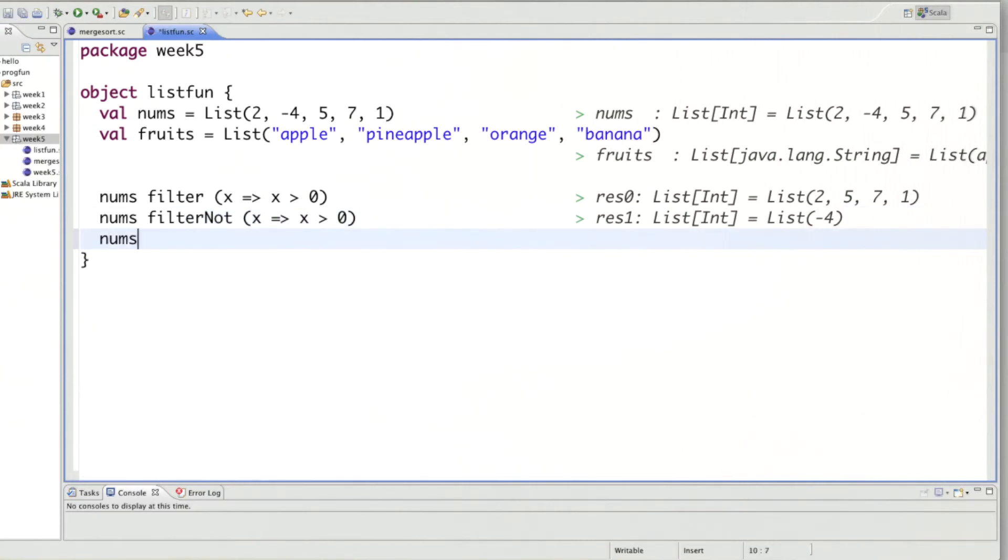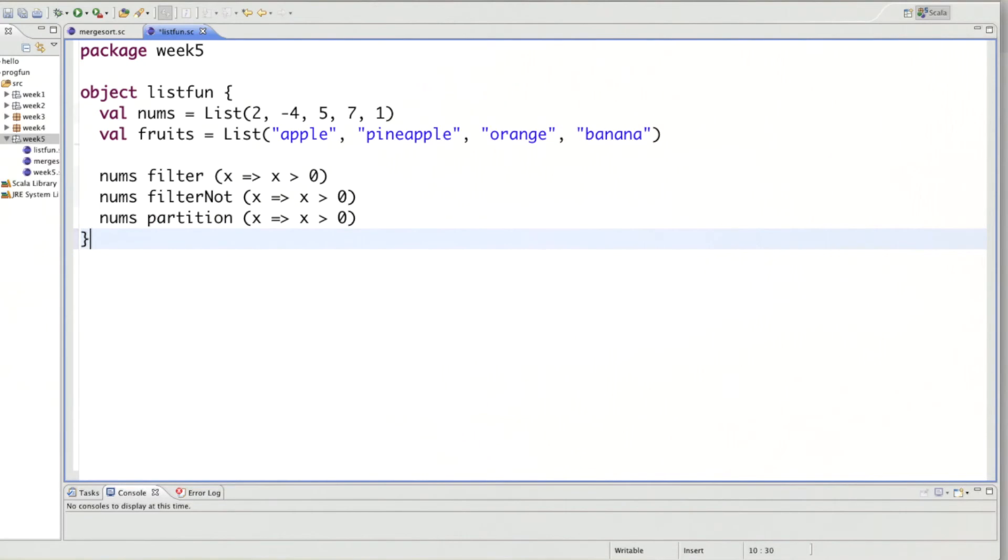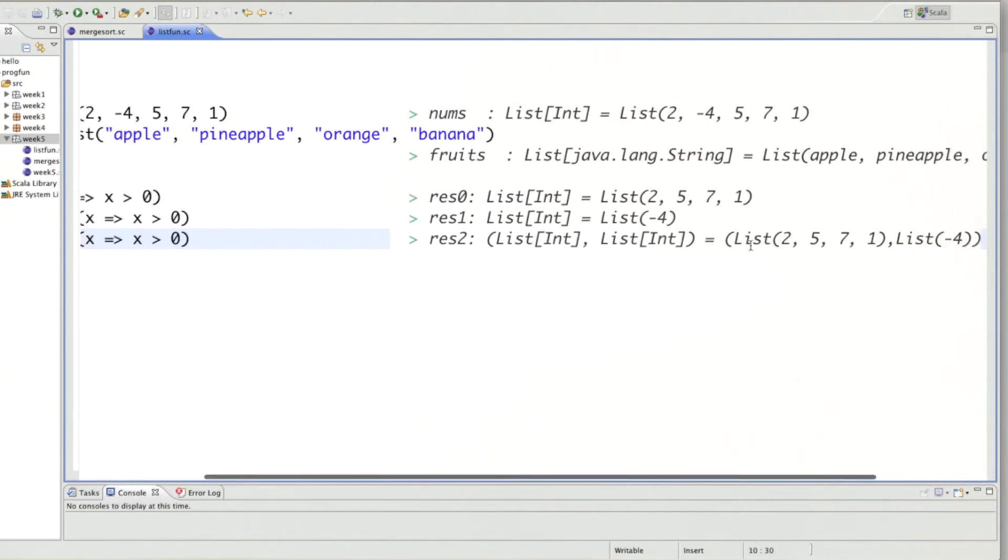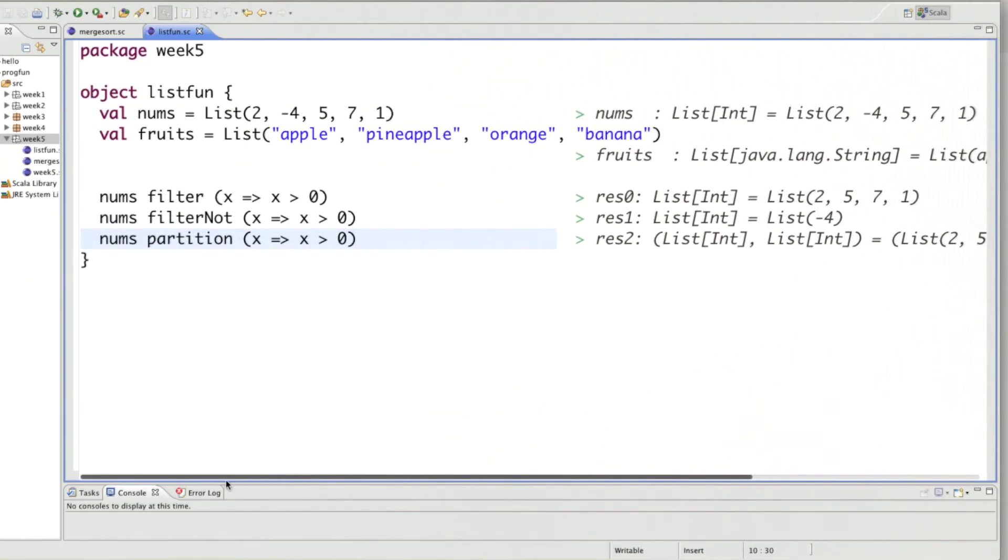The other method was partition. Partition is like filter and filter not in one go. So if you write that here, then what you see is you get a pair of two lists. The first list contains all those elements for which the predicate here is true. So that was the positive elements. And the second list contains all those elements for which the predicate is false. So you see that partition is just like filter and filter not as a pair. However, it will run in a single traversal through the input list numbers. Whereas if you do first a filter and then a filter not, you would get two traversals.